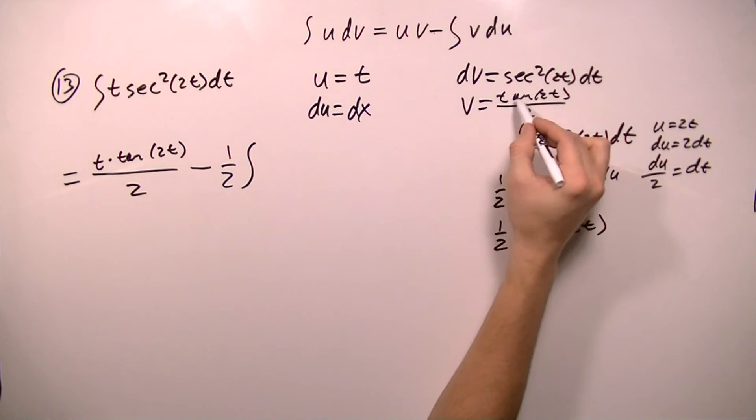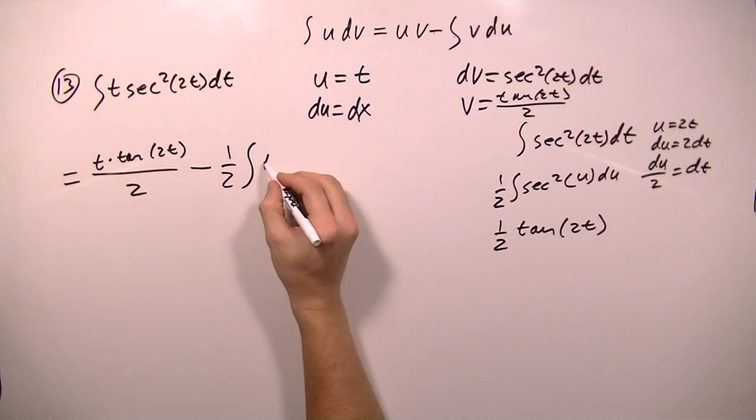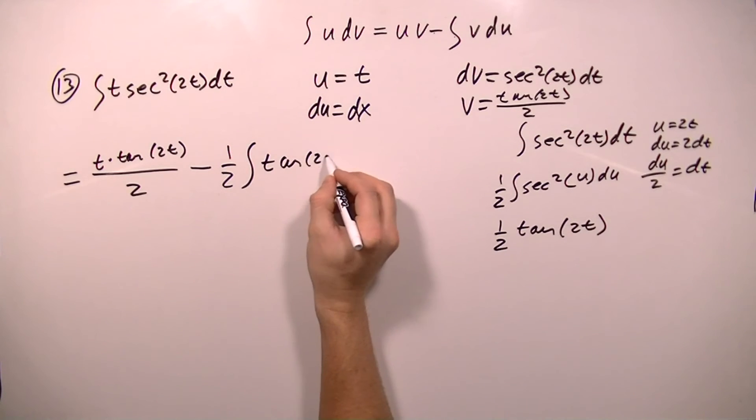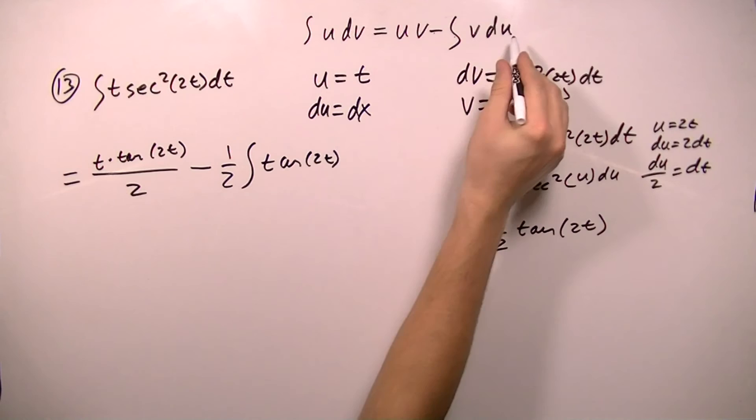and then I'm going to do the integral of what's left, and that's the top function here. Tangent 2t, and then du is dx.